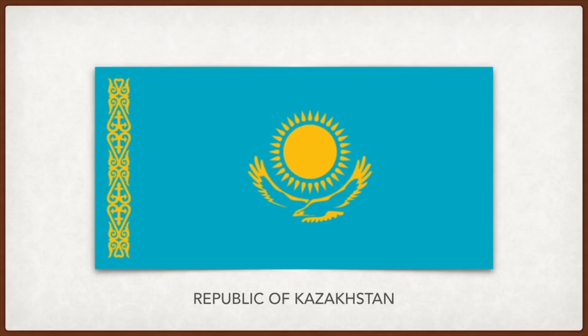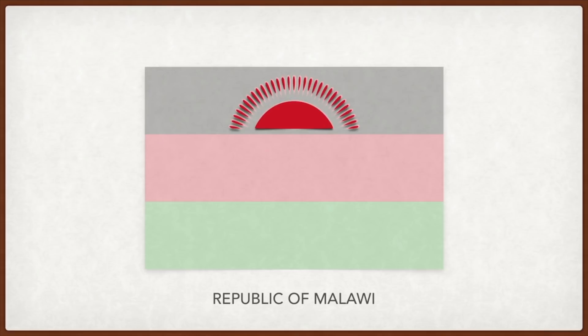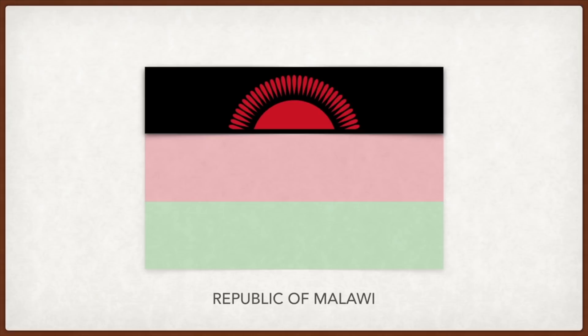Malawi: the rising sun represents the dawn of a new hope and freedom for Africa, as more and more African countries began to become independent from Europe. The black represents the indigenous people of Africa, the red the blood of their struggle, and green nature.